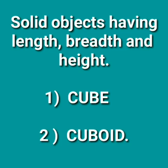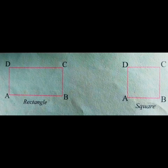This is a cube and you can see that all the faces are squares, and these are figures of cuboids. The faces are like rectangles. So these solid objects, cube and cuboids, are having three dimensions — length, breadth and height. Whereas figures like a rectangle or a square, they don't have any height; they have only length and breadth.